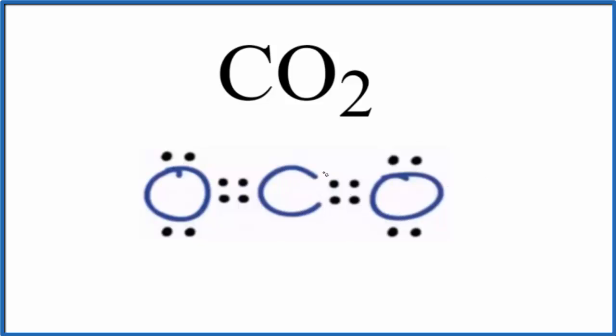So here's our Lewis structure, and you'll notice there's no lone pairs on the carbon here. This carbon right here, all the electrons, they're involved in the bonds. We have a double bond on each side. So these oxygens here, these symmetrical oxygens, they're going to push away from each other and be on opposite sides. They'll be as far away as they can from each other.